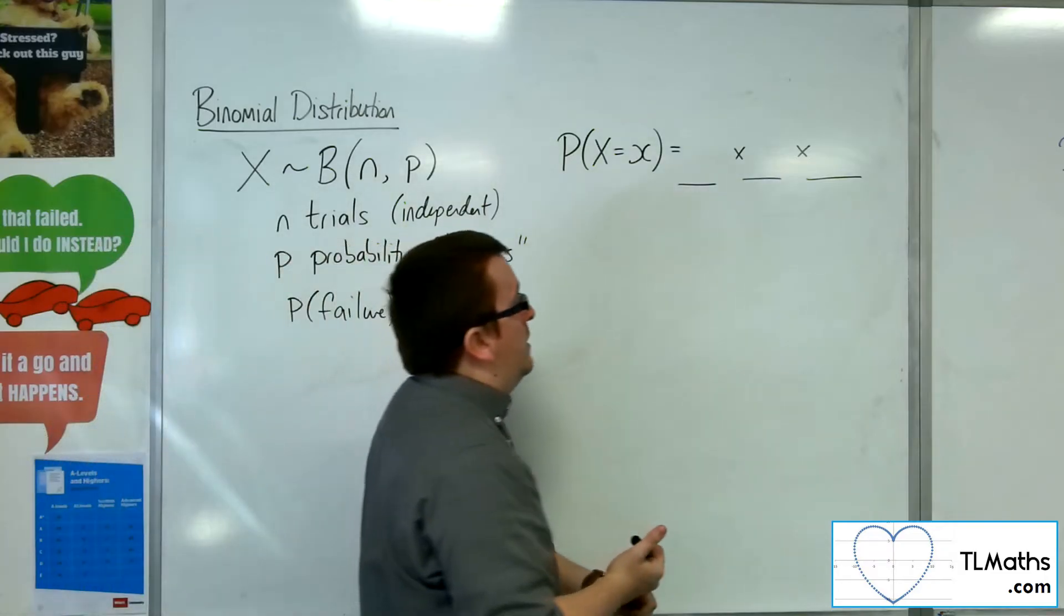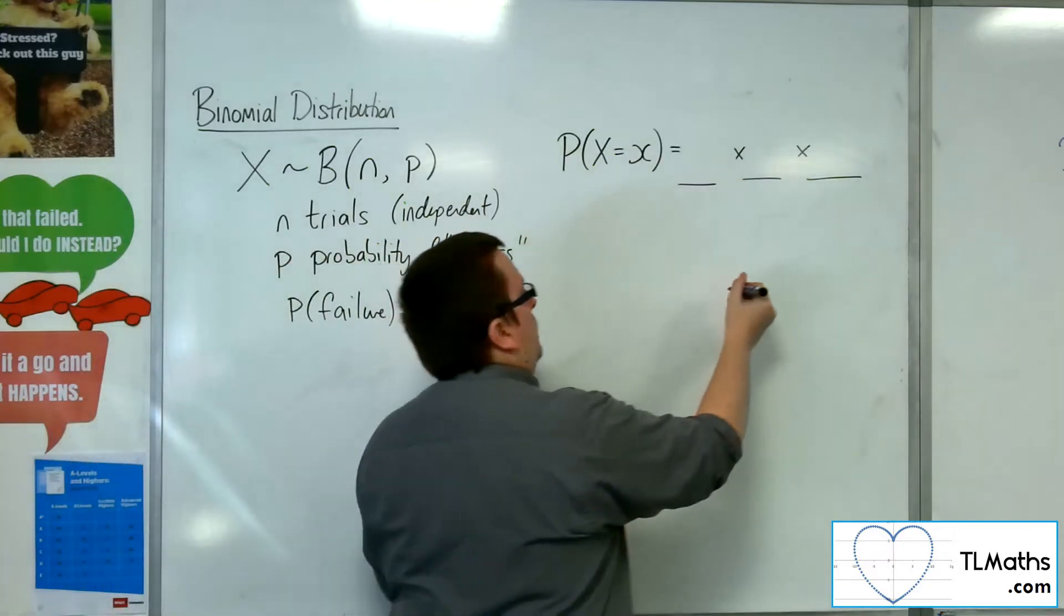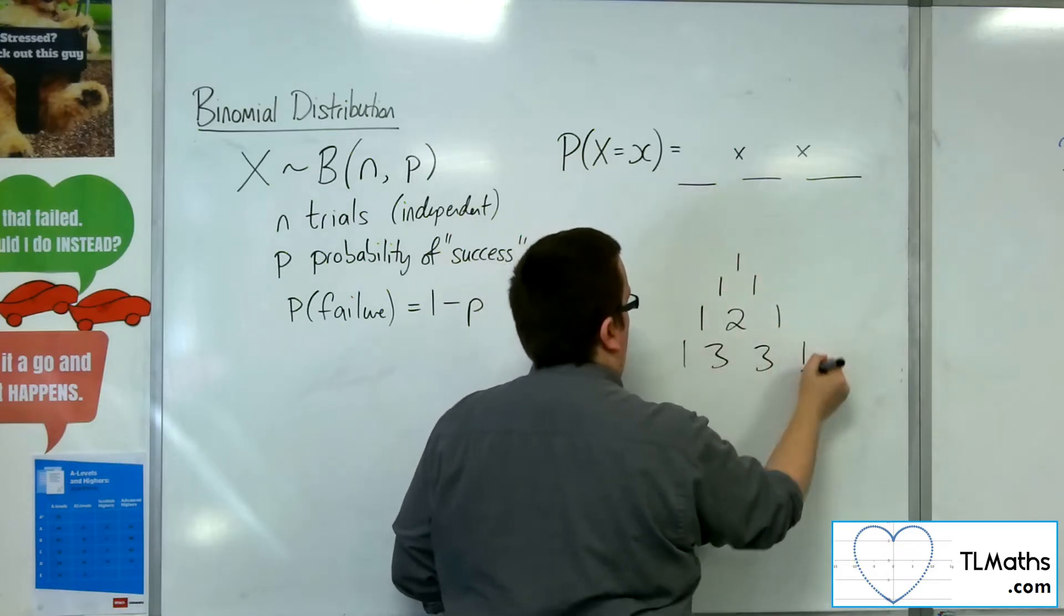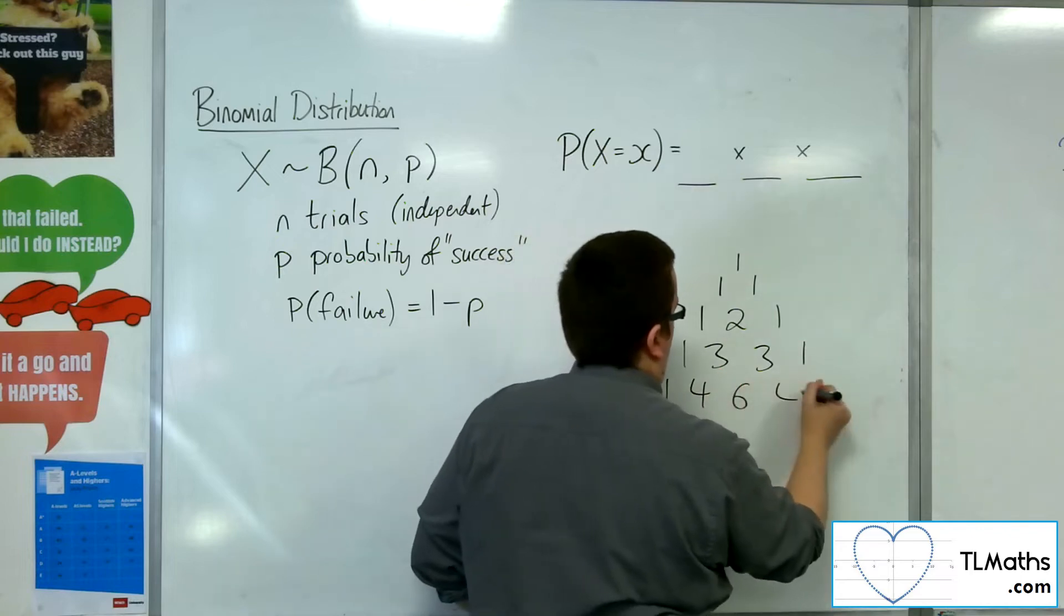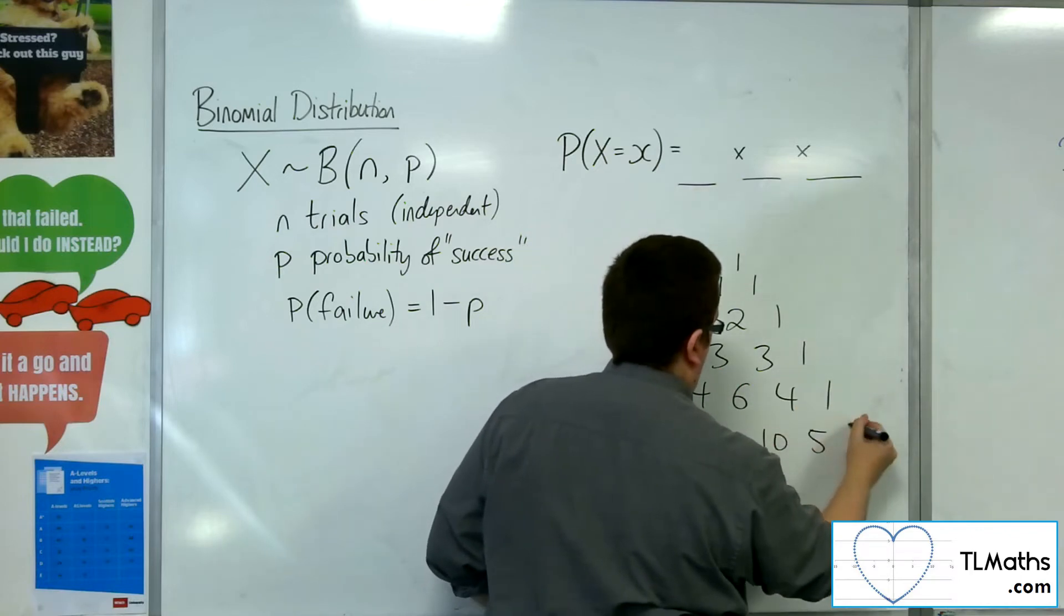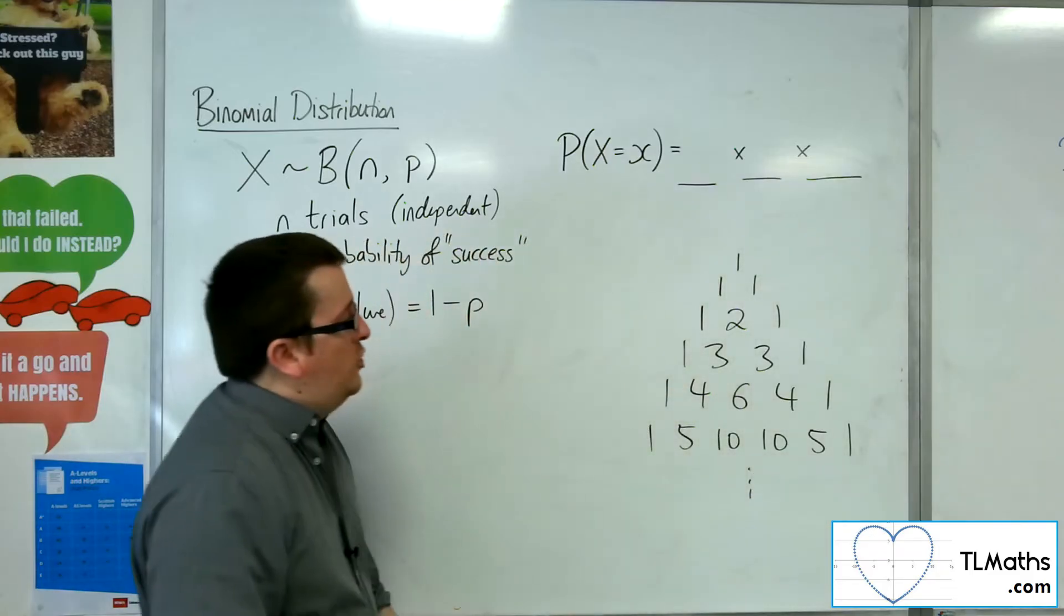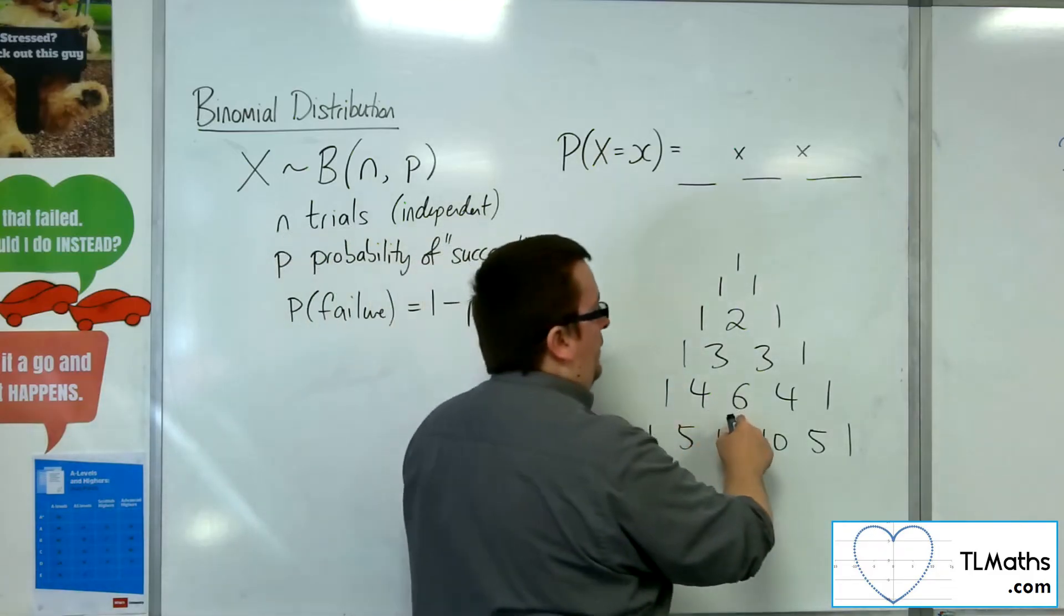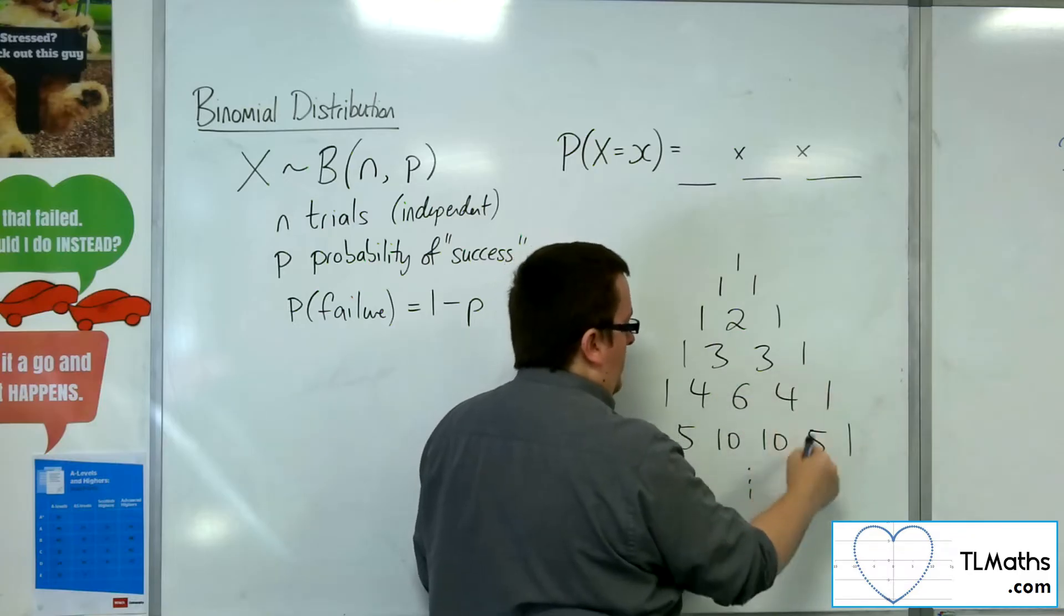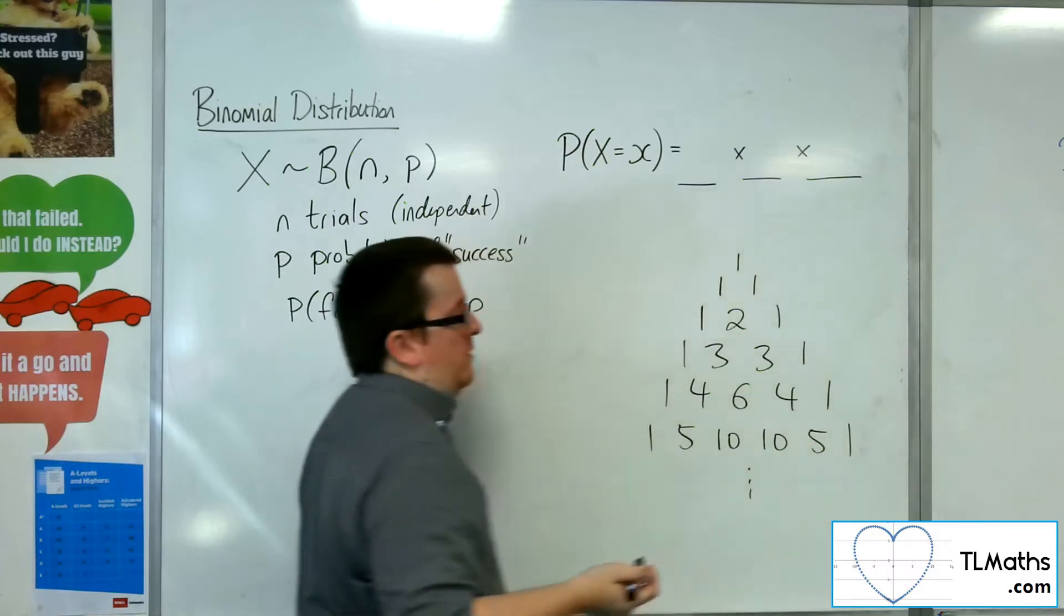The first section is the Pascal's triangle being used. So Pascal's triangle, which, to remind you, looks like this. So each of the individual terms is the sum of the two above it. So four is three plus one, ten is six plus four, etc.